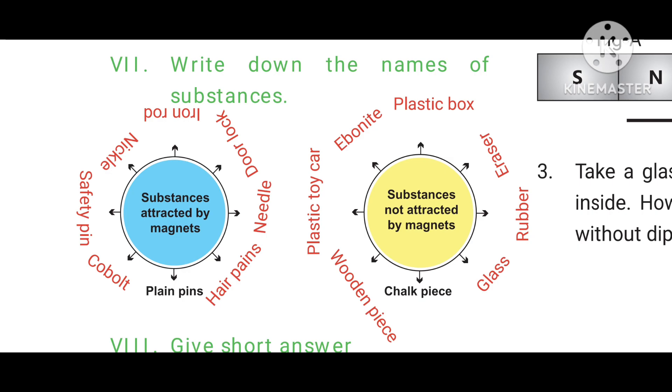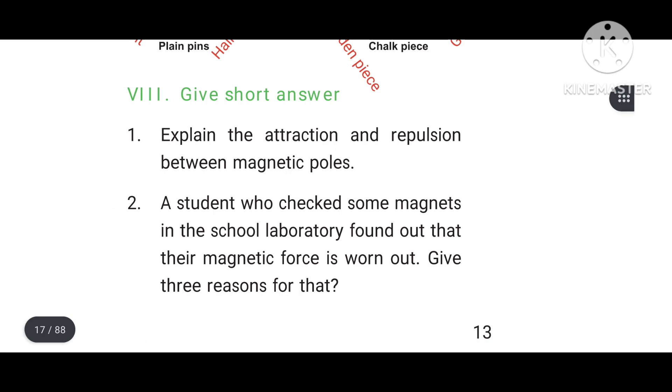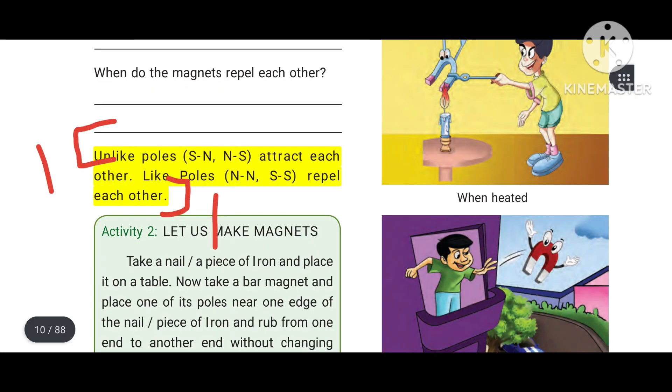Next picture: Substances not attracted by magnets. Example: Chalk piece, glass, rubber, eraser, plastic box, a bonnet, plastic toy car, wooden pieces. Roman letter 8, give short answer. First question: Explain the attraction and repulsion between magnetic poles. Answer: Page number 6, two lines above activity 2. Unlike poles attract each other. Like poles repel each other.